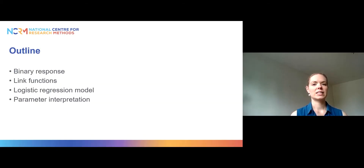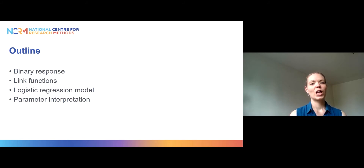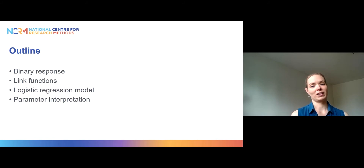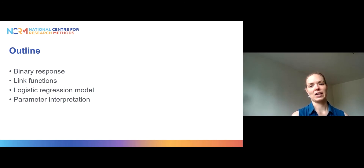The outline of today's session is: we will first talk about binary responses, so what kind of variables we might have as outcome or response variables with these models. Then we will talk about link functions — the trick we use in order to apply regression models with outcomes that are not continuous. Then we will look at what the logistic regression model actually looks like, and finally a simple example to learn how to interpret the results.